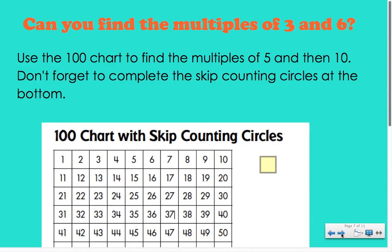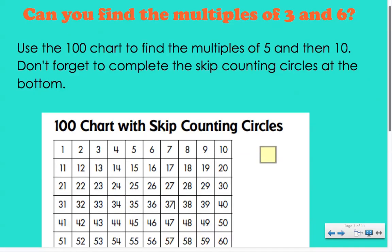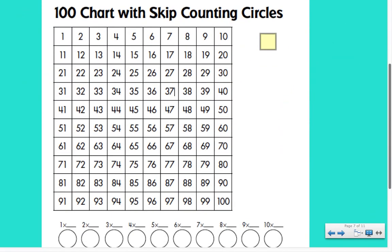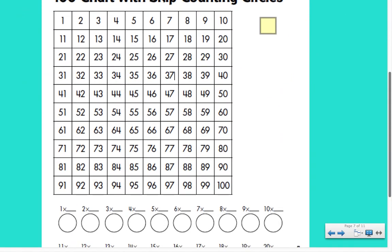Now that we have our twos, fives, and tens, we only have two more numbers to find the multiples of. Use your hundreds chart to find the multiples of three and six. On one chart, color in all of your multiples of three — and don't forget your skip counting circles. Then use another hundreds chart to color in all of your multiples of six, and again don't forget your skip counting circles. Go ahead and pause while you're doing this, and when you're ready come back and push play.